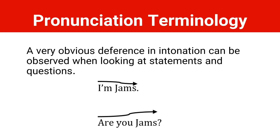When it comes to questions, we use rising intonation — for example, yes-no questions. And when it comes to statements, we use falling intonation. For example: 'I'm James.' As you can see, my voice goes down — 'I'm James' — so that means I use falling intonation. 'Are you James?' As you can see, my voice goes up while articulating this sentence.